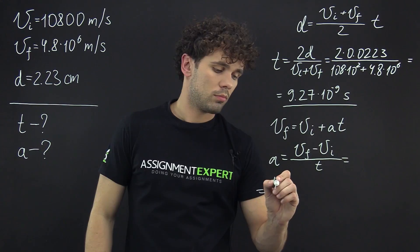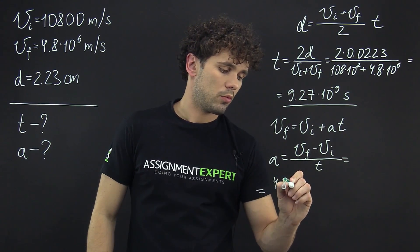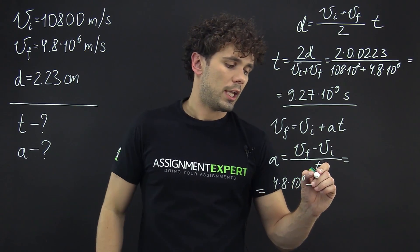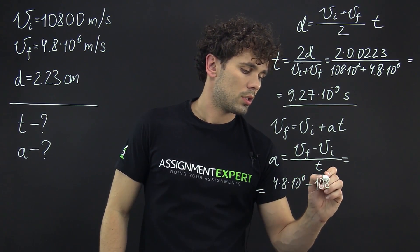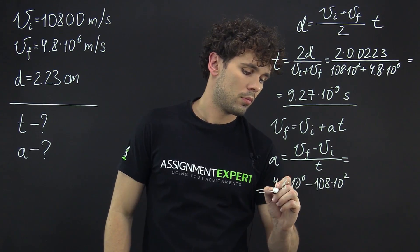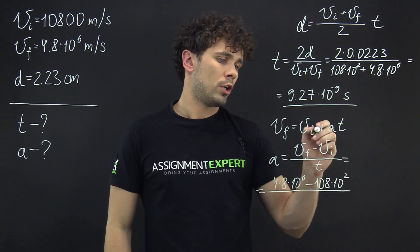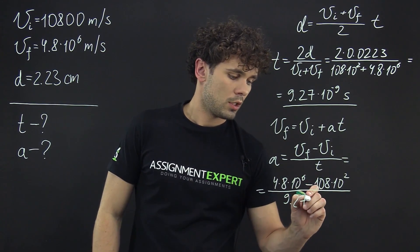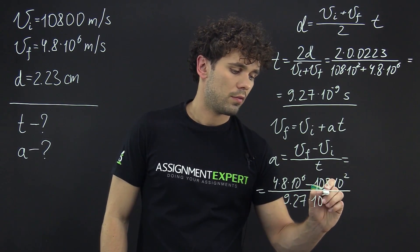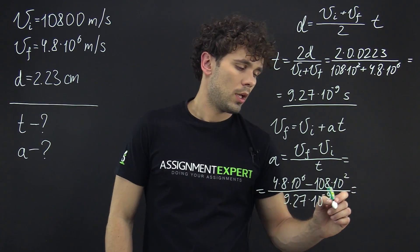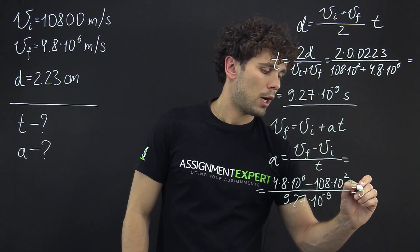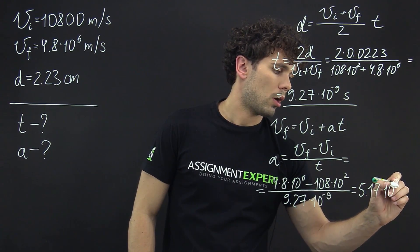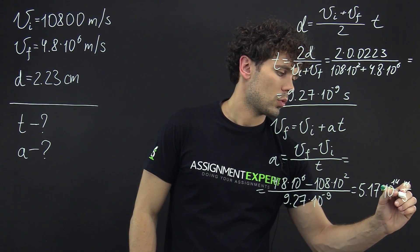We have 4.8 times 10 raised to the 6th power minus 108 times 10 raised to the negative 9th power. And we get 5.17 times 10 raised to the 14th power meters per second squared.